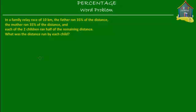Welcome to homecampus.com.sg. Let's solve this word problem. In a family relay race of 10 kilometers, the father ran 35% of the distance. The mother ran 35% of the distance and each of the two children ran half of the remaining distance. What was the distance run by each child?